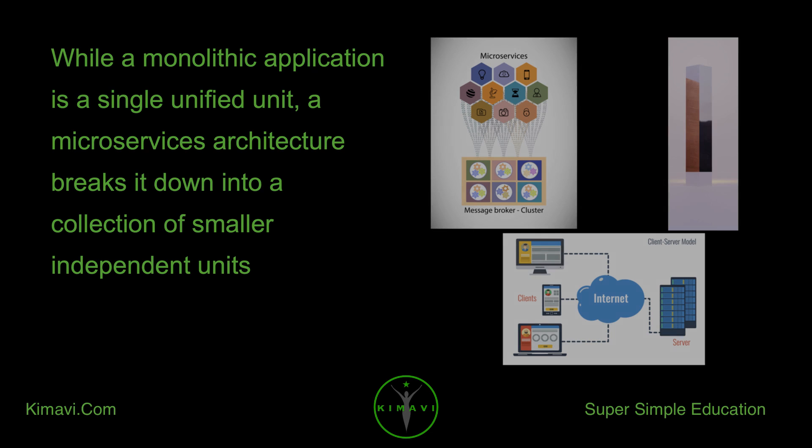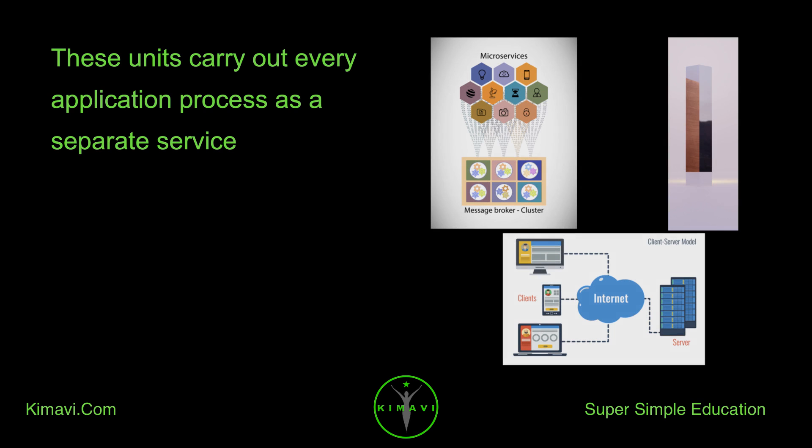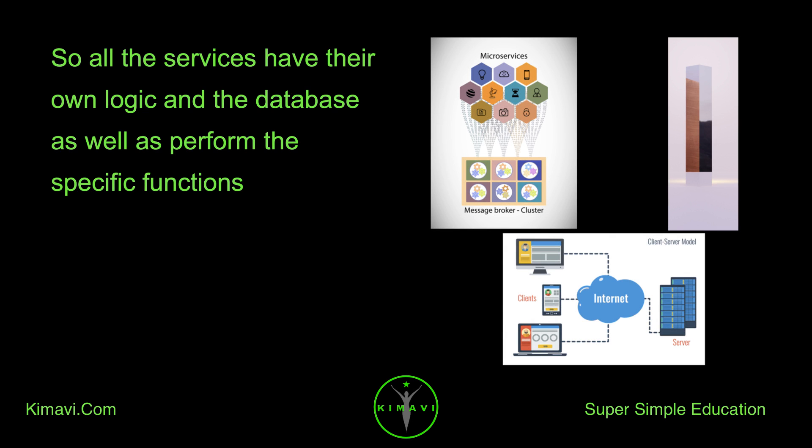While a monolithic application is a single unified unit, a microservices architecture breaks it down into a collection of smaller independent units. These units carry out every application process as a separate service, so all the services have their own logic and database, as well as perform specific functions.